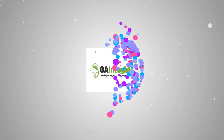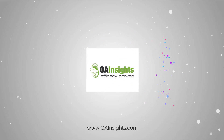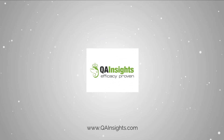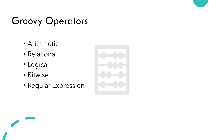Please subscribe to QA Insights channel. We are going to see about Groovy operators in JMeter. In the last video, we have seen how to define a string and how to print the string to the console and to the log viewer. Now we will see about Groovy operators in JMeter.